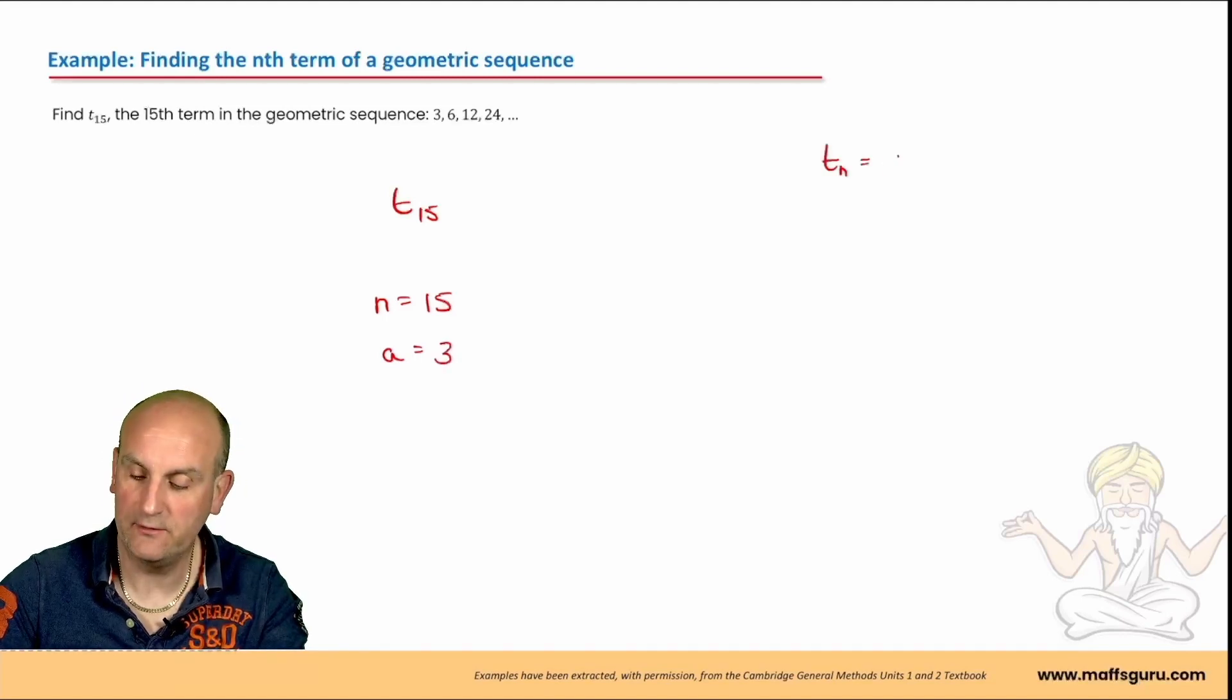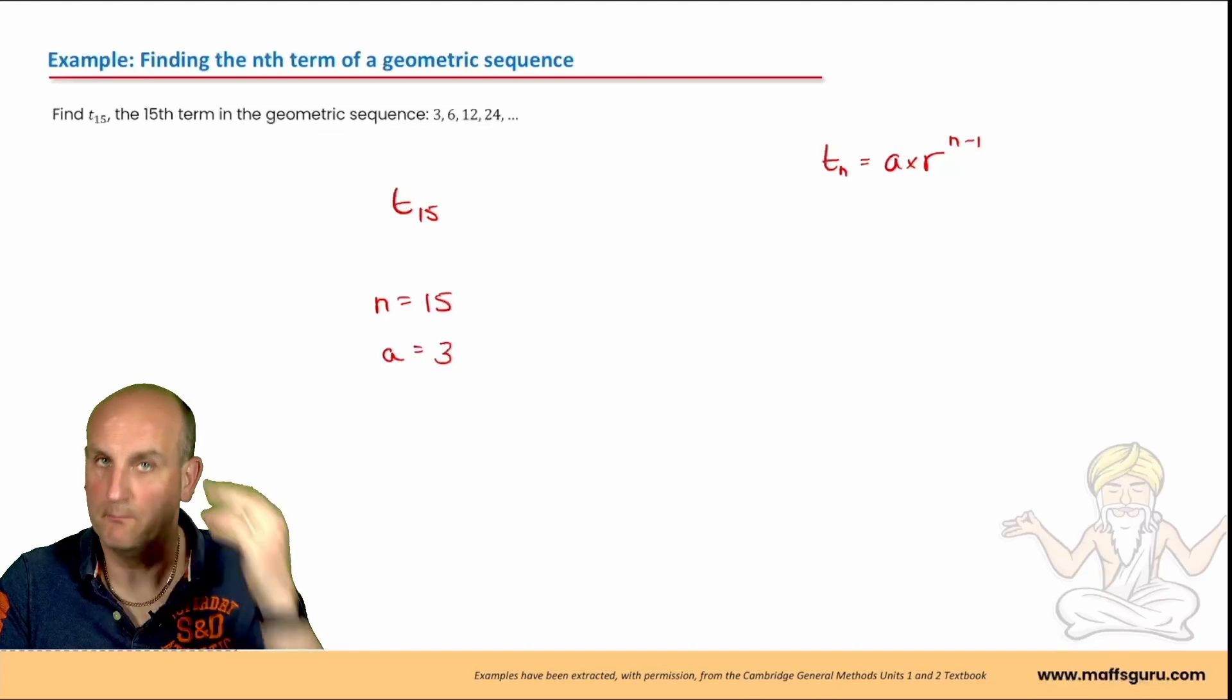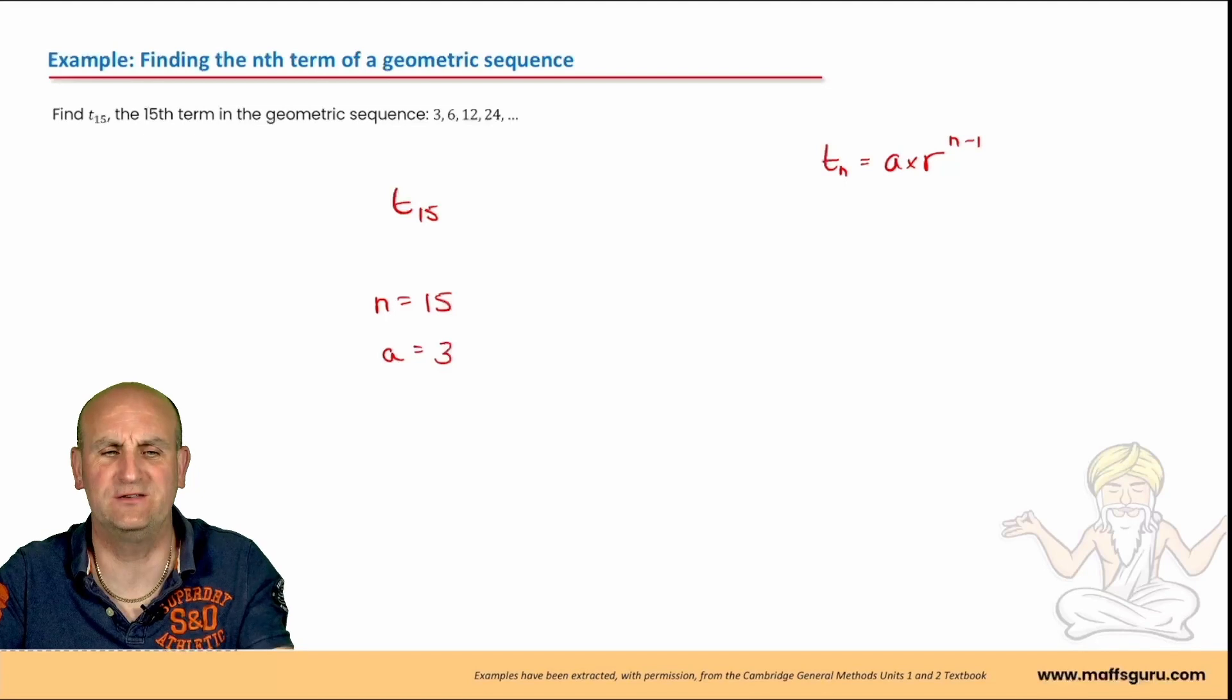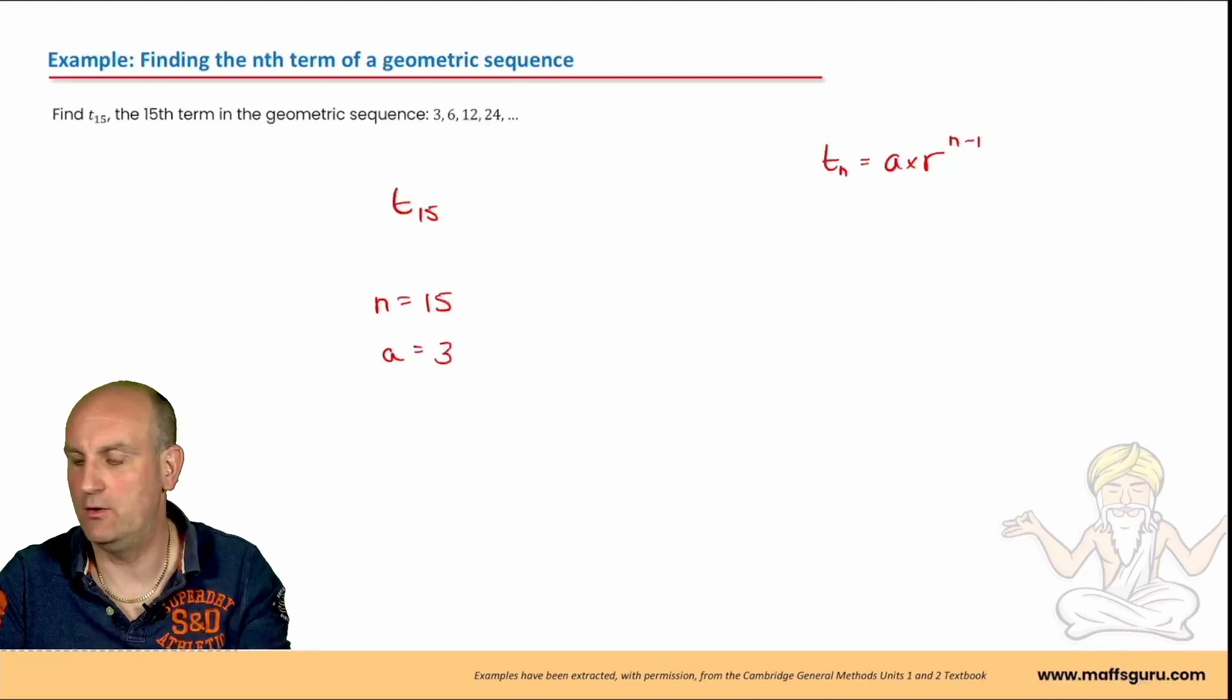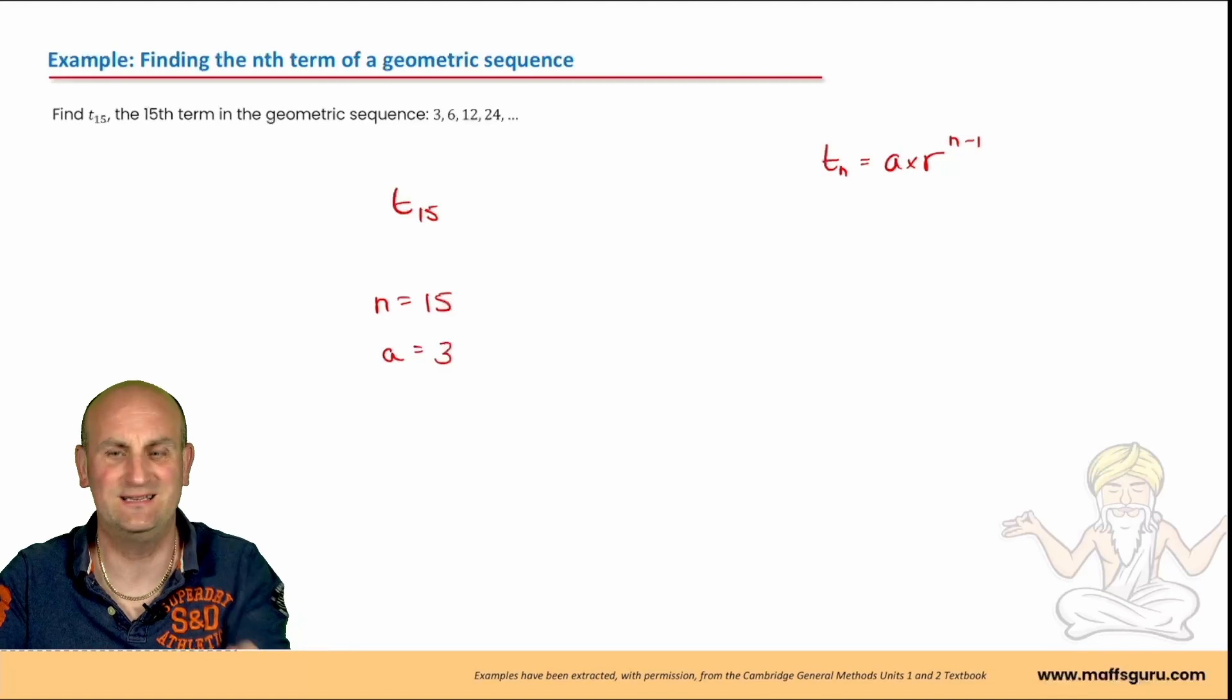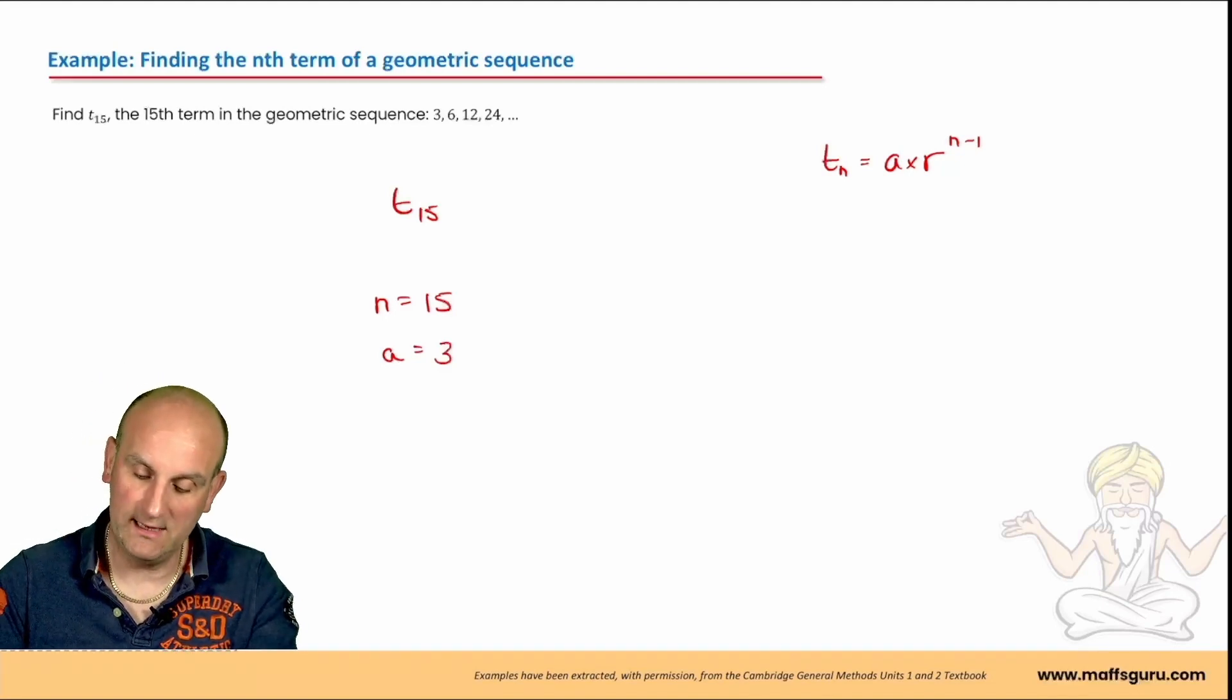Remember, t of n is equal to a times r to the power of n minus 1. Now, why do I write this down? Muscle memory. The more you write it down, the more your brain can remember it. It literally cannot not remember it. You do sports, you do music, you do something. You're teaching your brain, your muscles to keep repeating stuff for success. It's exactly the same here. Alright...